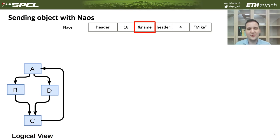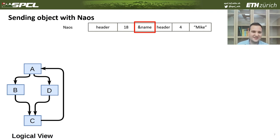I'd like to focus on object pointers. As you remember from the Person example, we had the field 'name', which is a normal C pointer that would be invalid on the receiving side. To explain how we efficiently recover this on the receiving side, consider a small abstract example: we want to send an object A, which has two references to objects B and D, both of which have a common reference to object C, which has a back reference to A. Overall, we need to send four objects and fix all these references on the receiving side.